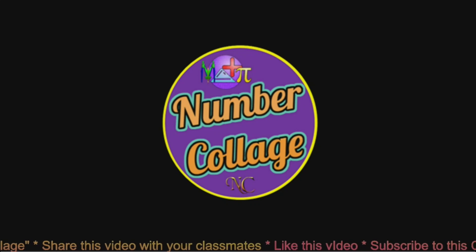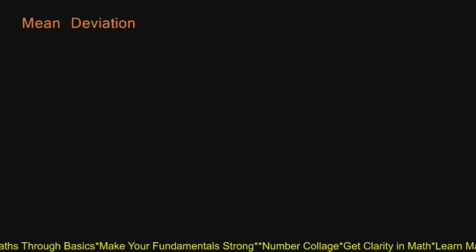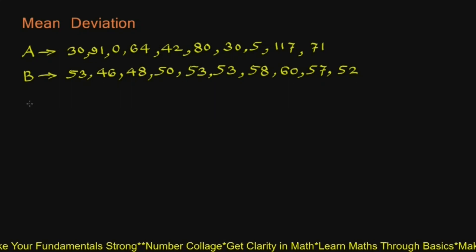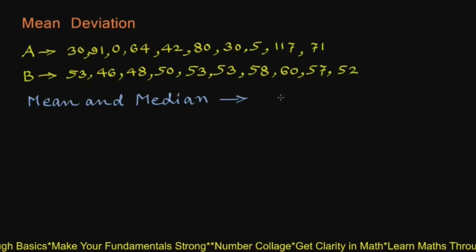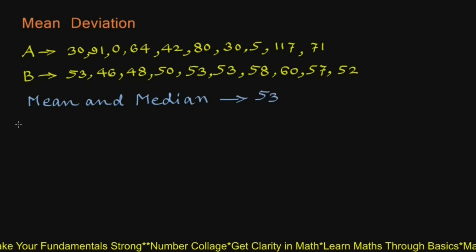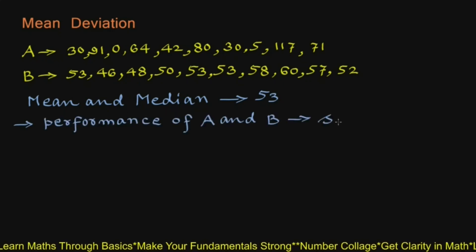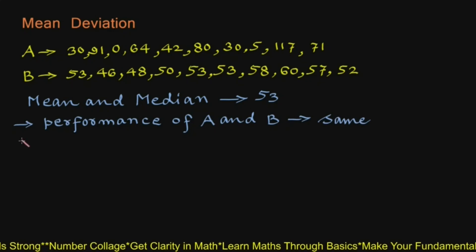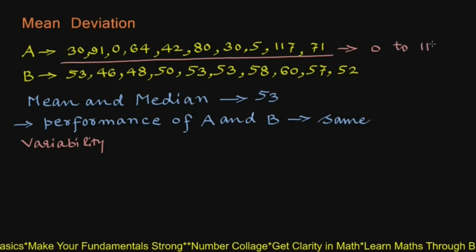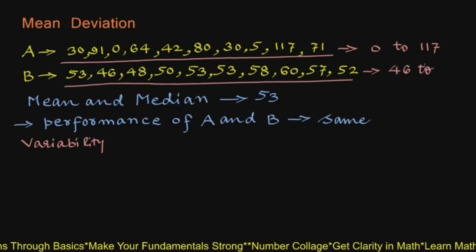Hope you will like my effort. We will consider the runs scored by 2 batsmen in their last 10 matches — runs scored by batsman A and runs scored by batsman B. If we calculate mean and median of the runs scored by both batsmen, both these values work out to be 53. But that doesn't mean the performance of the two players A and B is the same, because there is variability in the scores of batsman A which ranges from 0 to 117, whereas the variability in the scores of batsman B is from 46 to 60.